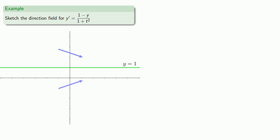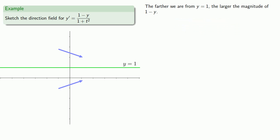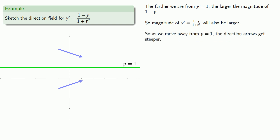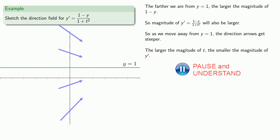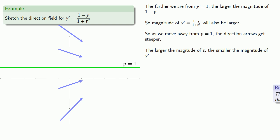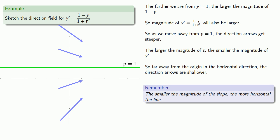We'd like to fill out the direction field further. The farther we are from y = 1, the larger the magnitude of (1 - y), so the magnitude of y' will also be larger. As we move away from the line y = 1, the direction arrows get steeper. On the other hand, the larger the magnitude of t, the smaller the magnitude of y'. Since a smaller magnitude slope means a more horizontal line, far away from the origin in the horizontal direction the direction arrows are going to be shallower — whether we go right or left.